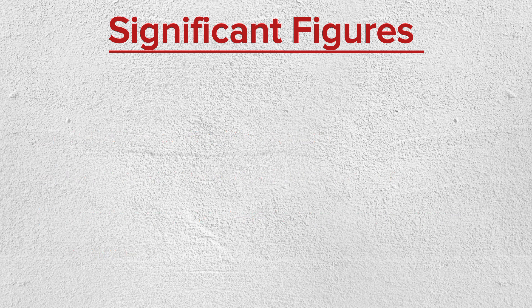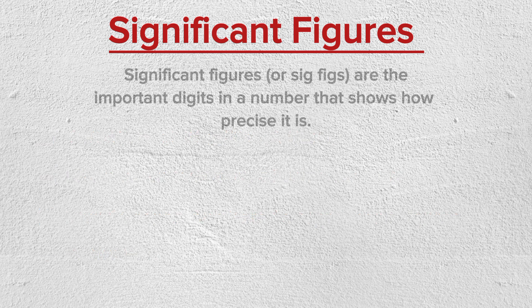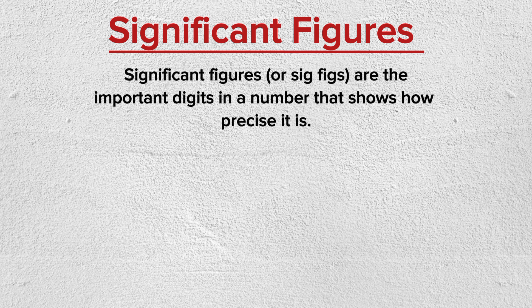What are significant figures? Significant figures, or sig figs, are the important digits in a number that show how precise it is. For example, if we have a number like 0.456, the important digits are 4, 5, and 6, and that makes it three significant figures.